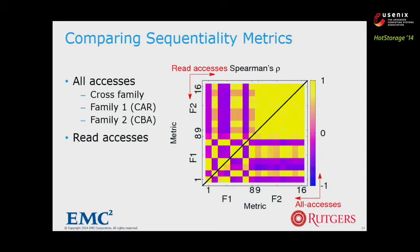We also analyzed read accesses in the top-left region, because reads must be serviced while writes could be buffered — so sequentiality matters more to reads. The read access results are qualitatively very similar to the all-accesses result. We noticed that more than one-third of metric pairs are negatively correlated, suggesting their rankings were at least partially reversed. This unexpected result occurs because some traces in the dataset strongly match one property while others match another, causing reversed rankings when the two properties are combined differently. System researchers should be careful, as negatively correlated metrics can change results completely.